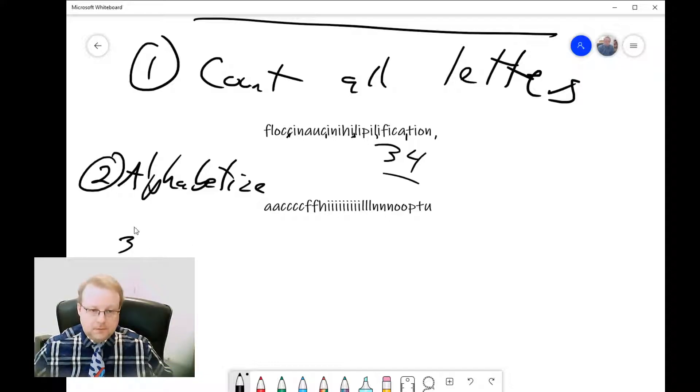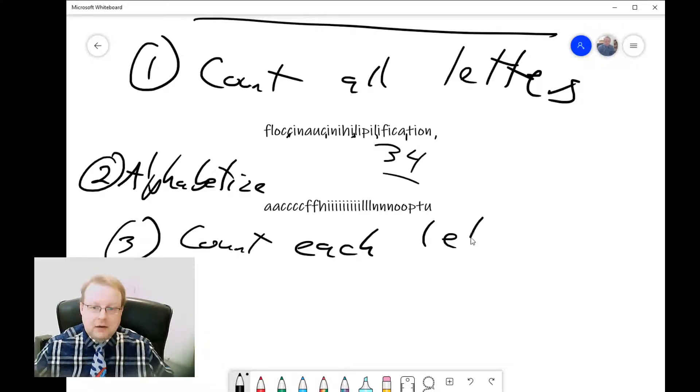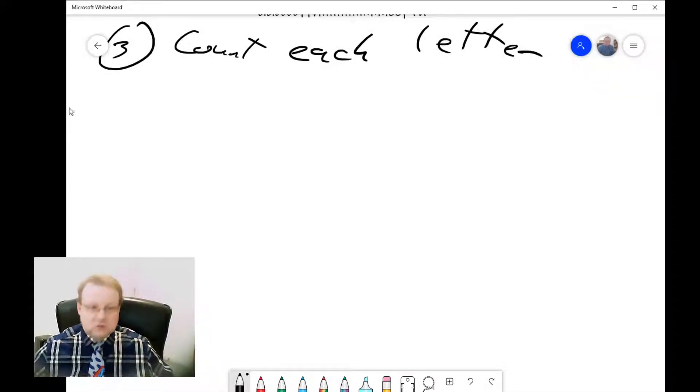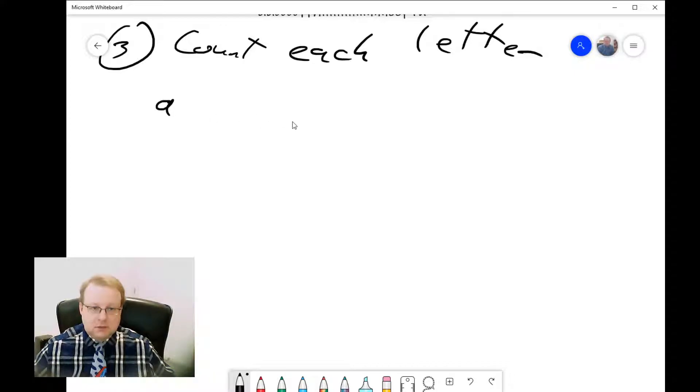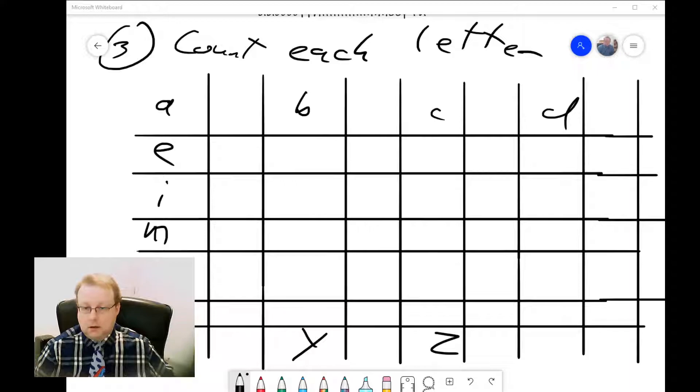Step three is to count each letter: how many A's, how many B's, how many C's do we have here? We'll want to set that up with tally marks. A, B, C, D—we can fill out our alphabet like this. Now we've got a chart made, we can fill in all the letters.